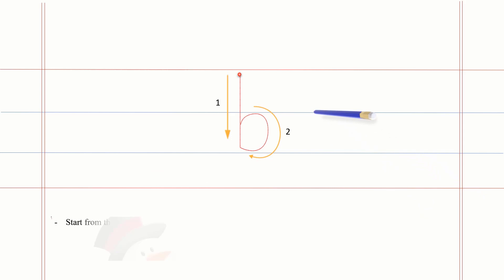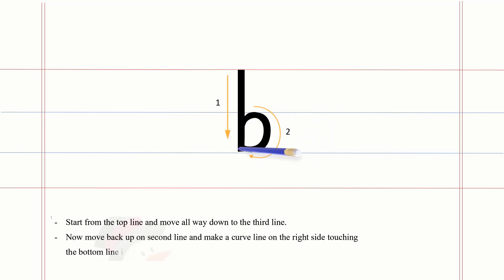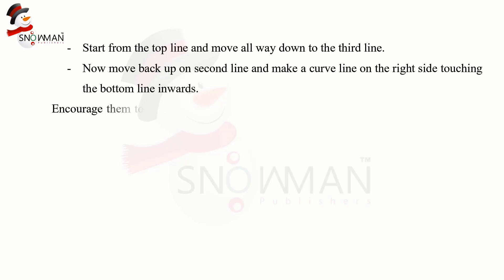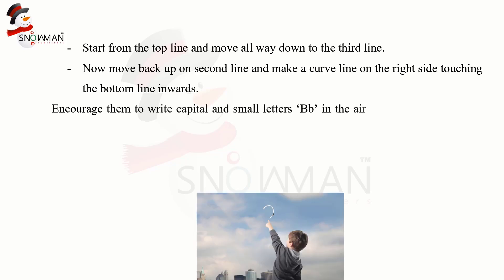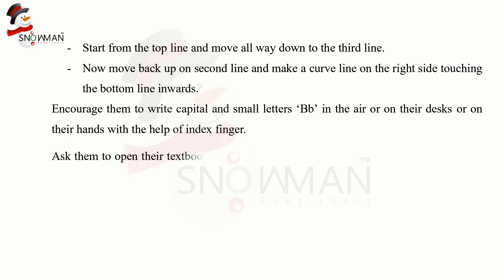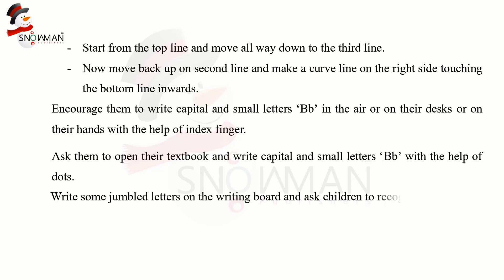For small letter B: start from the top line and move all the way down to the third line. Move back up to the second line and make a curved line on the right side, touching the bottom line inwards. Have students write capital and small letters B in the air, on their desks, or on their hands using their index finger. Then ask them to open their textbooks and write capital and small letters B with the help of dots. Write some jumbled letters on the writing board and ask the children to recognize B.